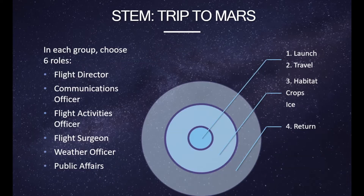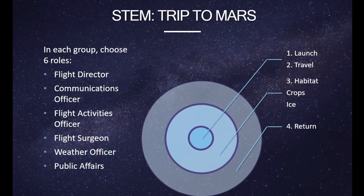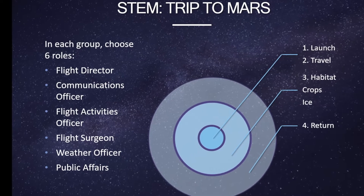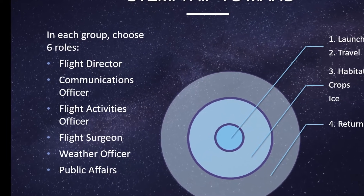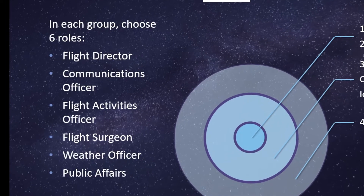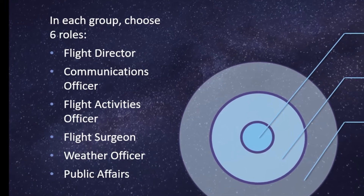So in your groups, there's going to be six roles. We need one of you to be a flight director, one to be a communications officer, one to be a flight activities officer, one to be a flight surgeon, one to be a weather officer, and one to be public affairs. That's six roles.